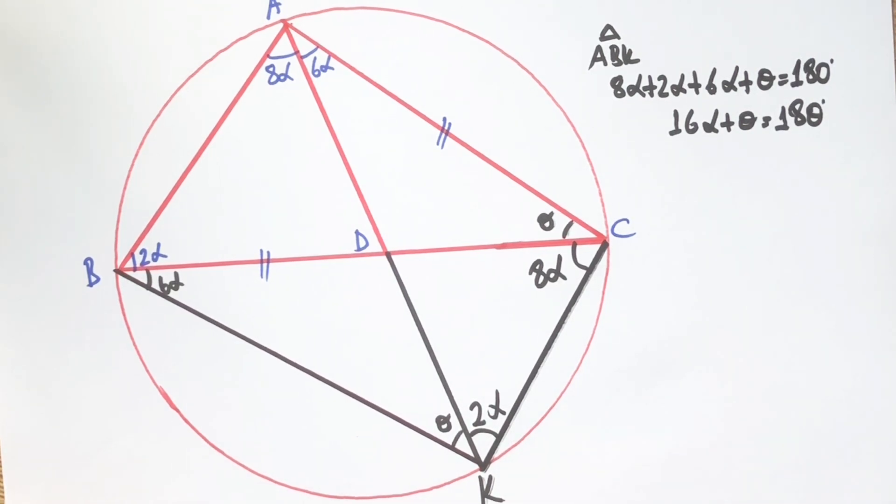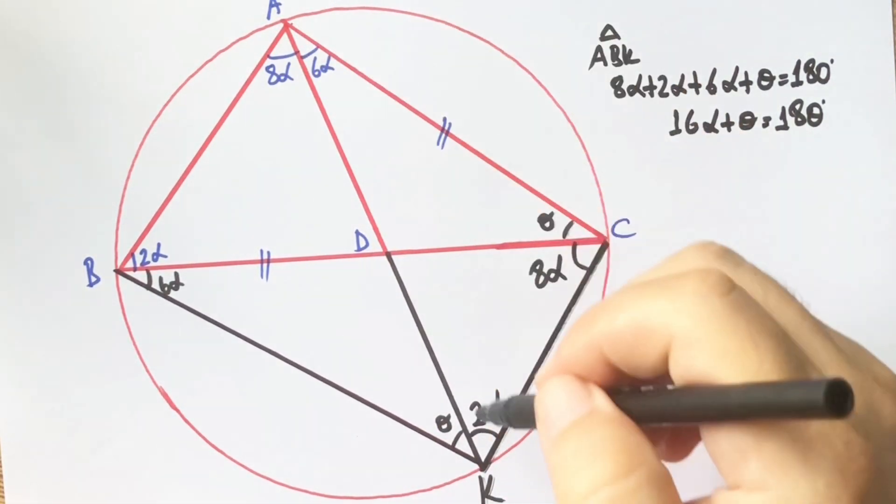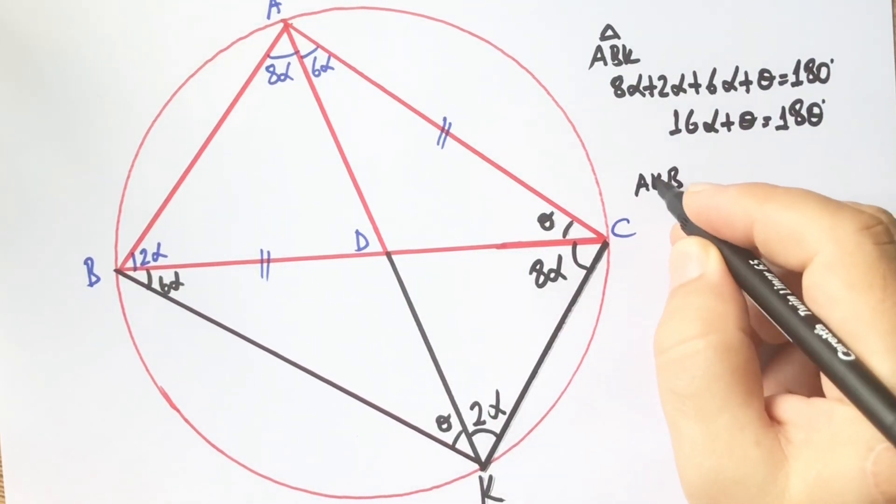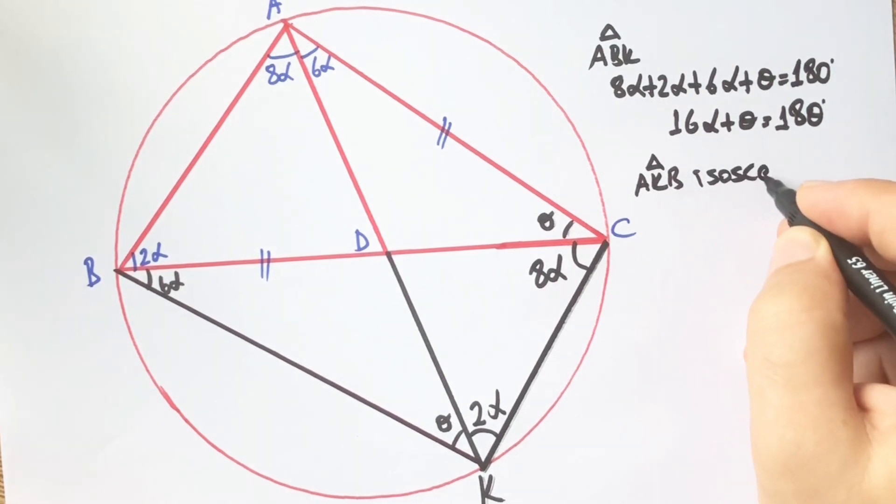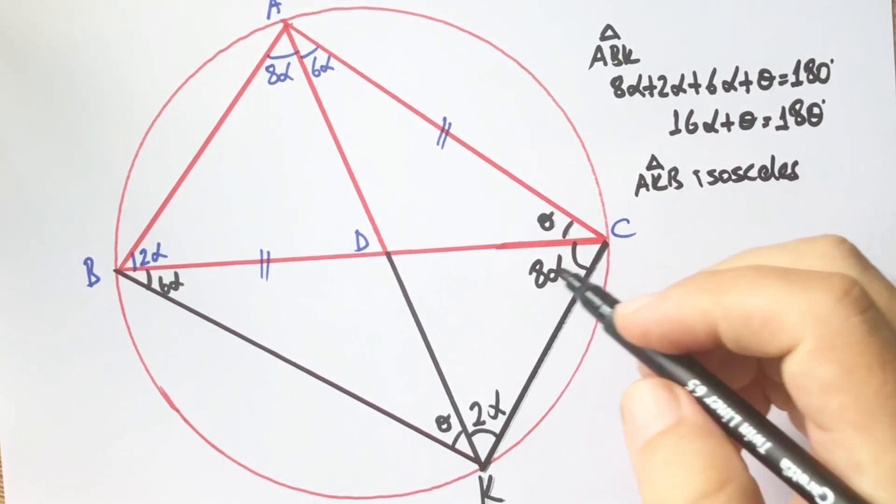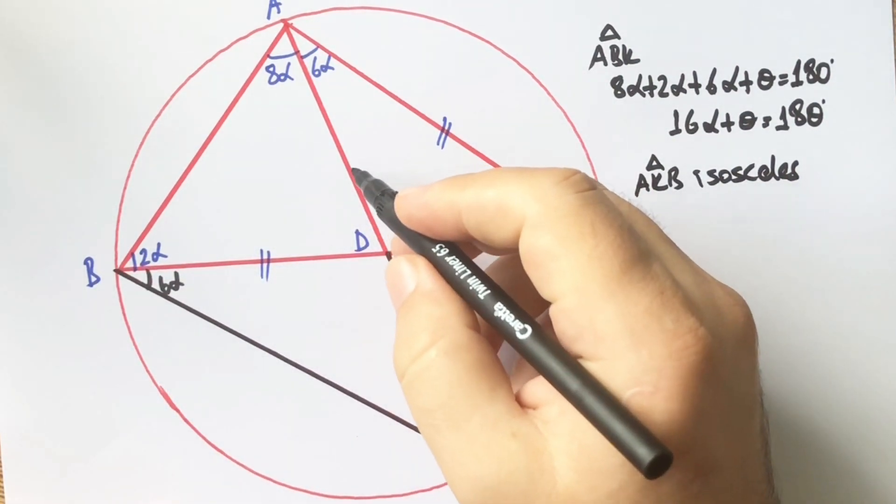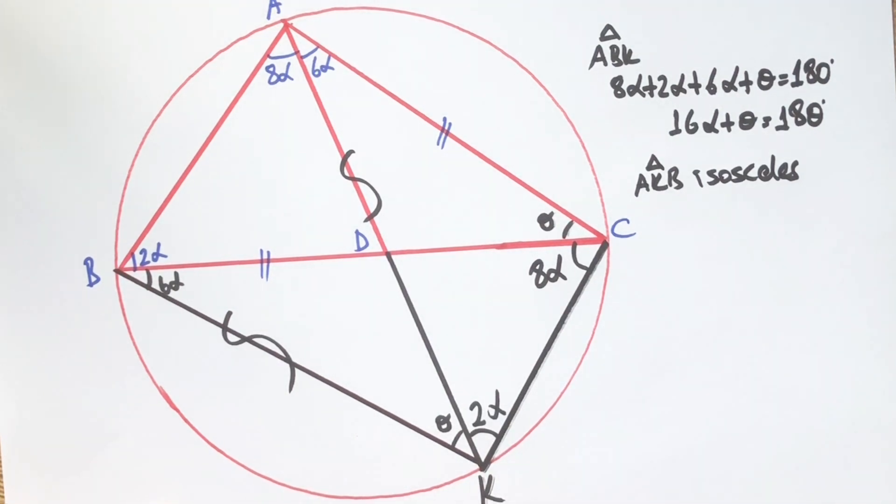We know that AK must equal BK because triangle AKB is an isosceles triangle. That means this 2α length must be equal.